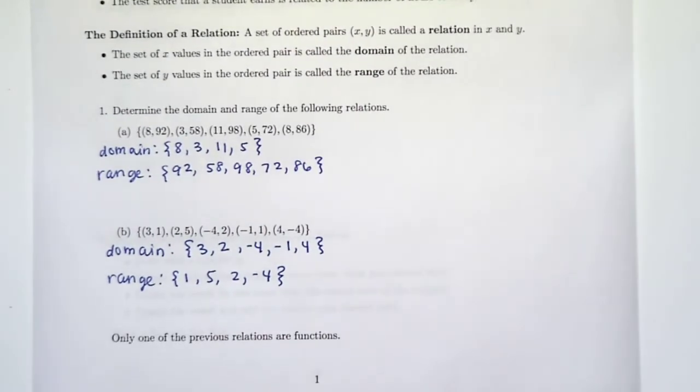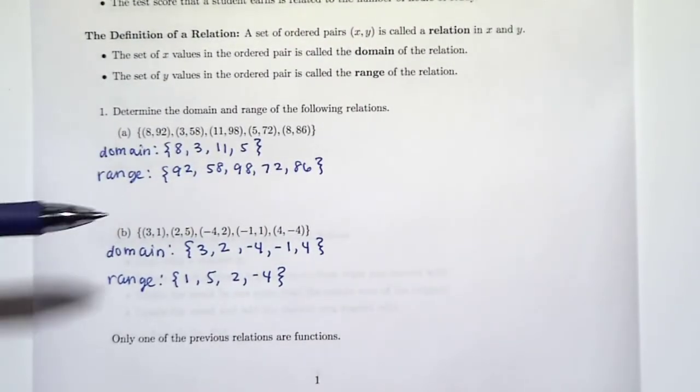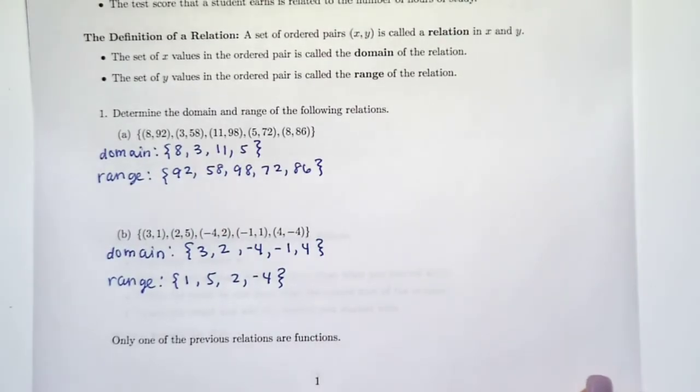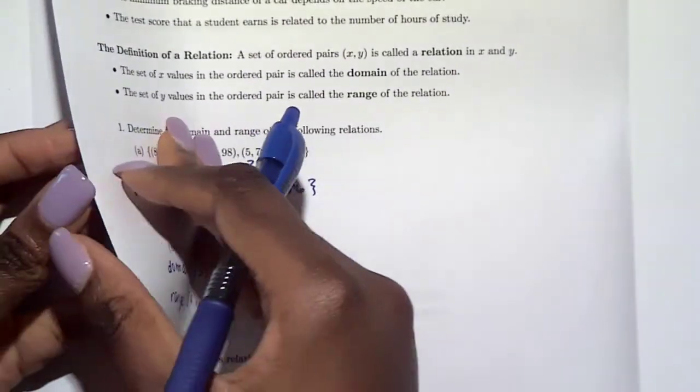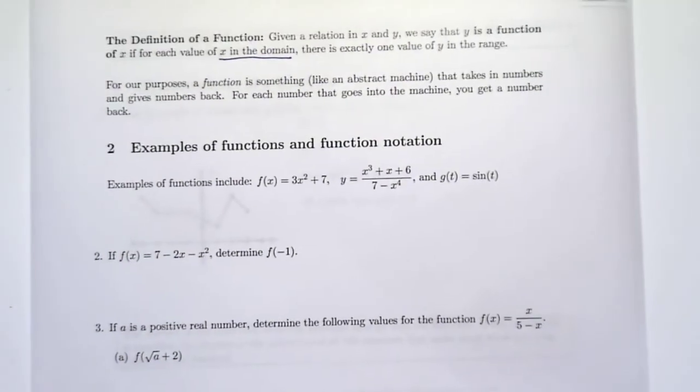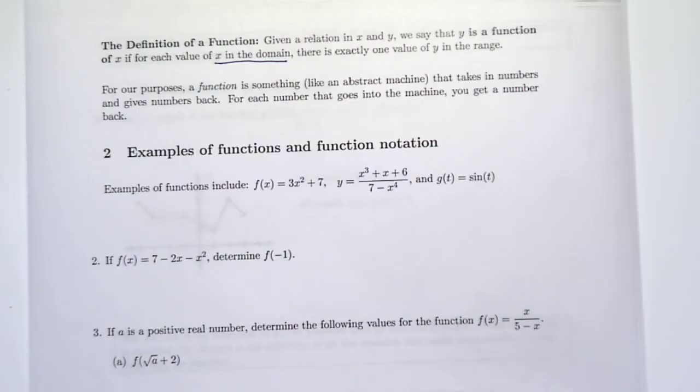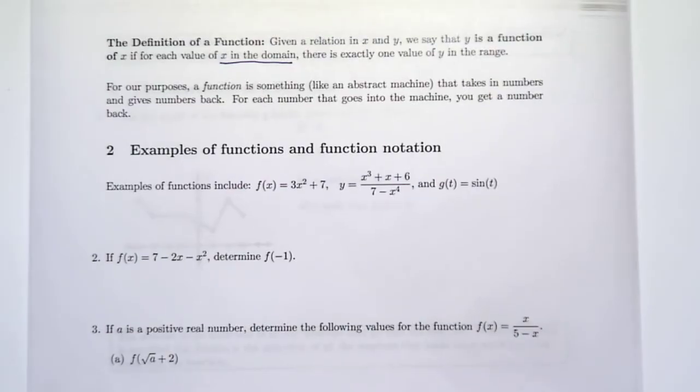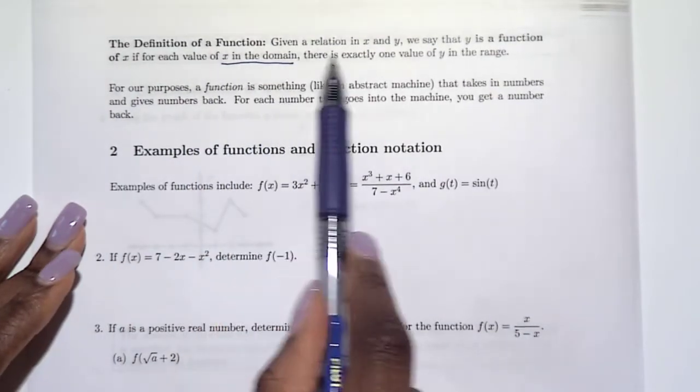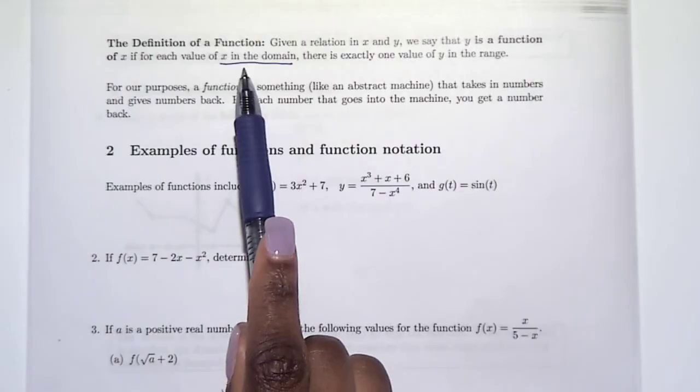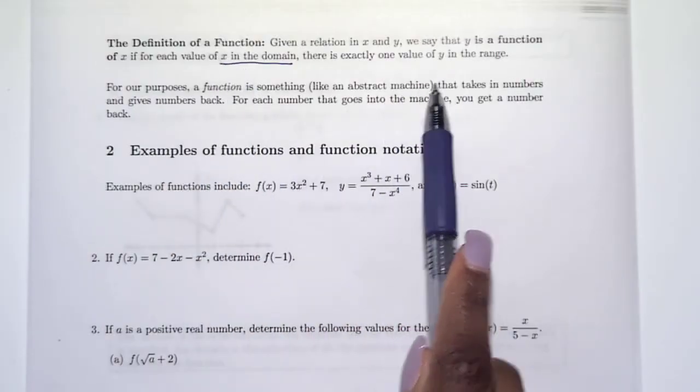Let's talk about what a function is, then we'll determine which one is a function and which one is not. On the next page, here's the definition of a function. We have to start with a relation. Given a relation in x and y, we say that y is a function if for each value of x in the domain there is exactly one y in the range. We only care about the x values here when we're talking about functions. We want to make sure that each x only has one y.